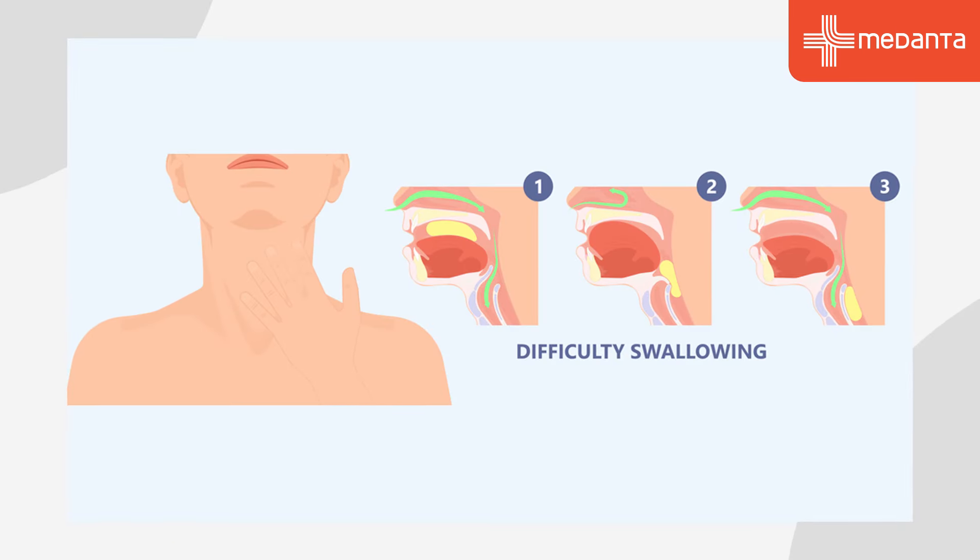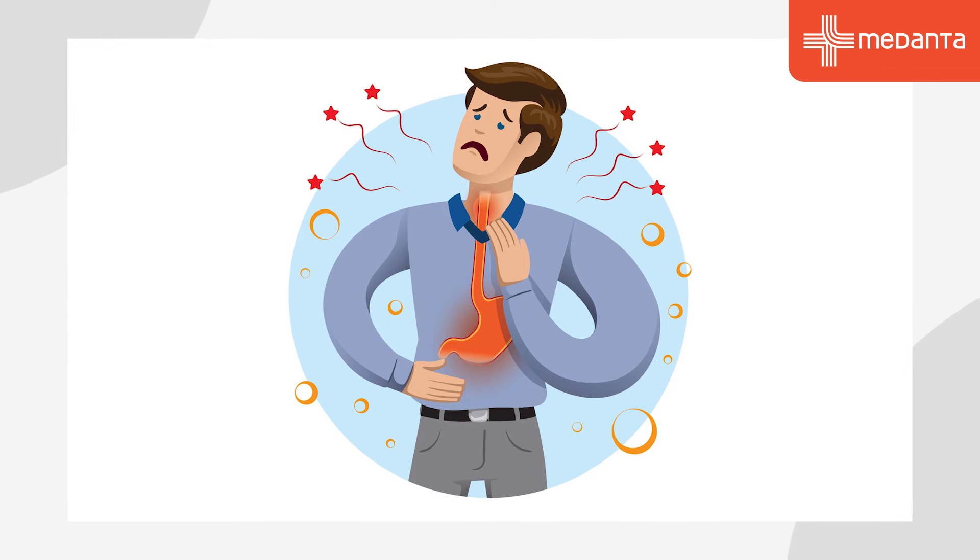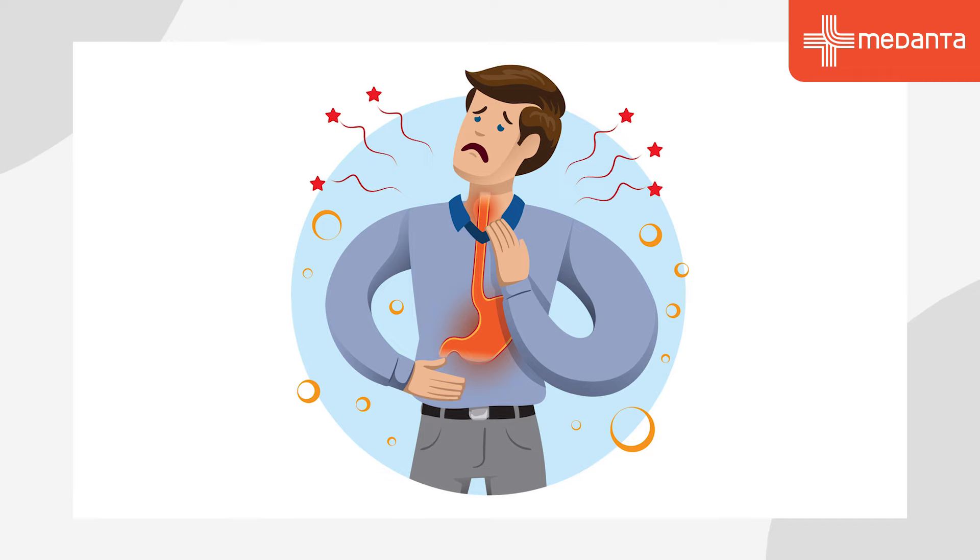Esophageal cancer has a common symptom called progressive difficulty in swallowing food. This means that if you have a problem with solid diet, then you move to a soft diet. If you have a problem with soft diet, then you have a problem with liquid diet. And when you realize that you can't even swallow a liquid diet, that is called progressive difficulty in swallowing food — the most common presentation.